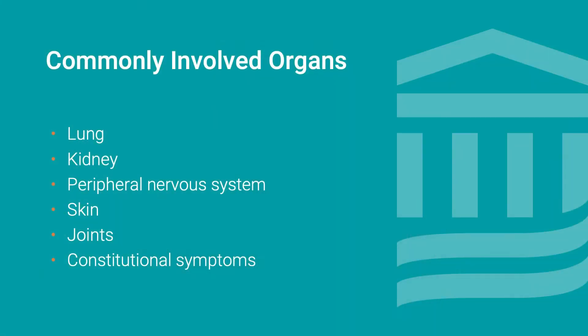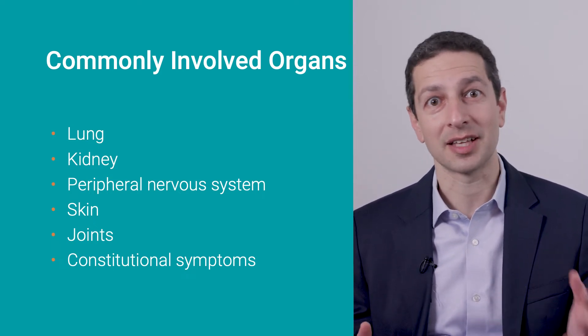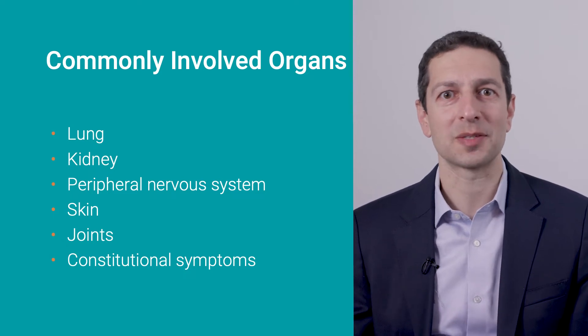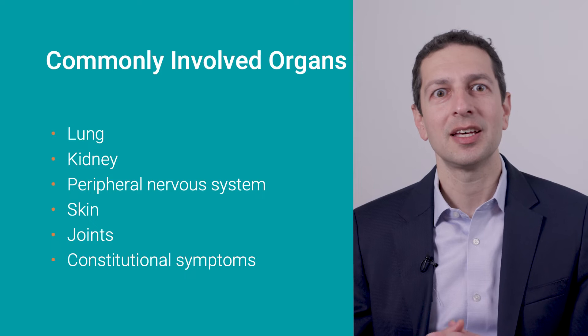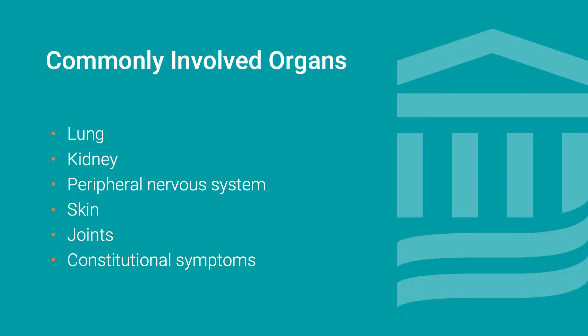These conditions share many similarities, including the organs they affect. Commonly affected organs are the lung, where you could have bleeding manifesting as shortness of breath and coughing up blood; the kidney, which causes a kidney inflammation called glomerulonephritis; the peripheral nerves, which can cause numbness and weakness in the legs or arms; a skin rash known as palpable purpura; joint pain; and then just feeling unwell — fevers, weight loss, and night sweats.